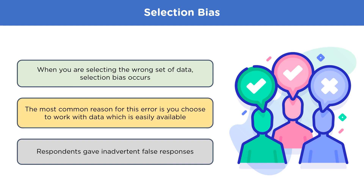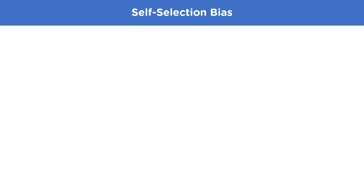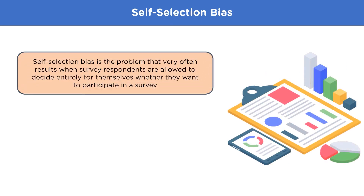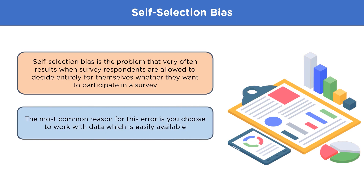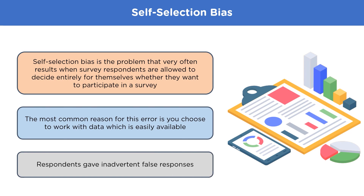The next type is self-selection bias. Self-selection bias occurs when respondents are allowed to decide entirely for themselves whether they want to participate in a survey or not. For example, suppose you want to assess a program for improving the eating habits of shift workers. Those who sign up may already be more health-conscious, which is why they're interested in the program. In this case, it wouldn't be fair to conclude whether the program was effective — this is a self-selection bias.